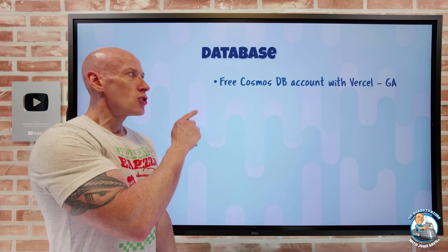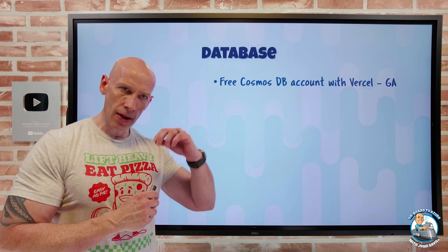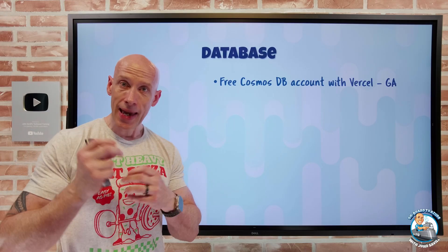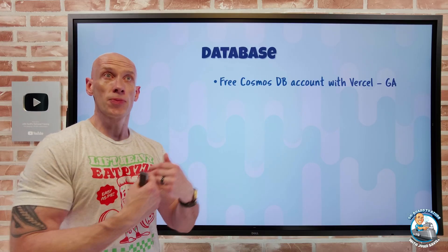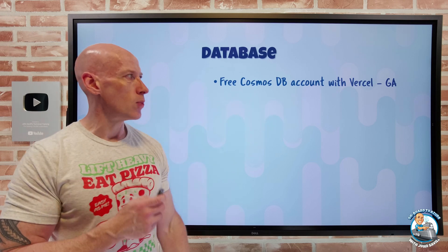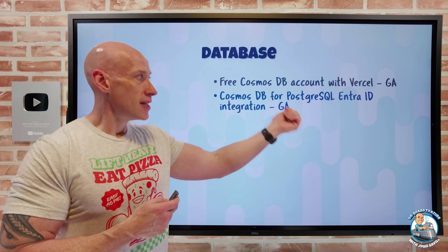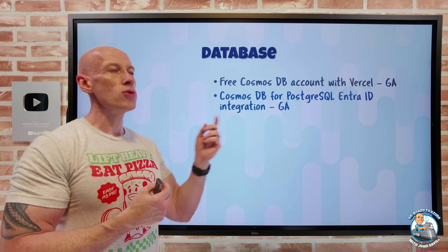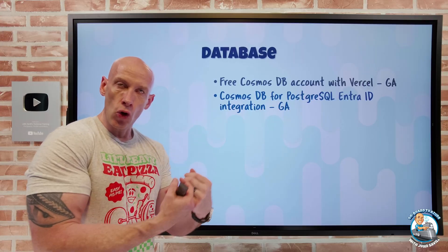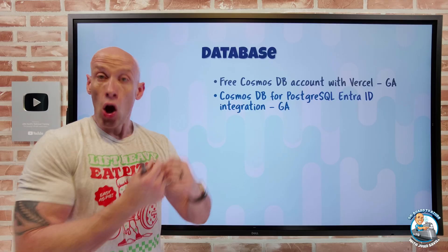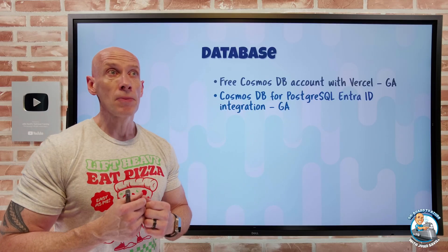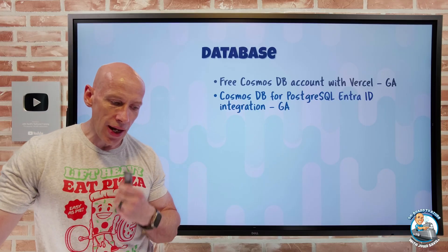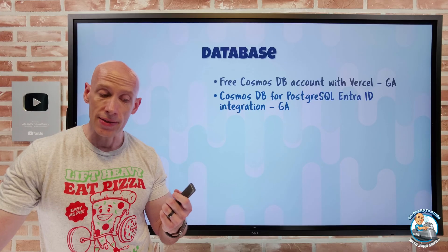On the database side, Vercel — a platform for web development and deployment — has an integration with Cosmos DB. You can now create the free Cosmos DB account you get per subscription through that integration. Cosmos DB for PostgreSQL, using the Citus extension for sharding and higher performance, now supports Entra ID integration. You can choose Entra ID identities only, native Postgres only, or a combination, configured independently per cluster.